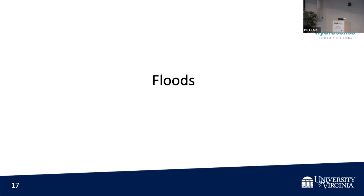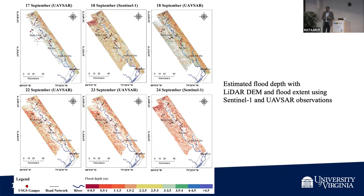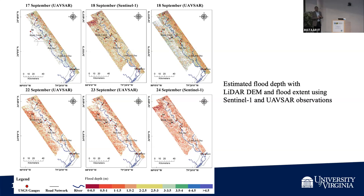I said I'd talk about floods, droughts, landslides, and permafrost. For floods: this is Hurricane Florence-induced flooding in South Carolina, the PD watershed, September 17 to 24. We're using the gauge network as well as two instruments: the UAVSAR flown by JPL at 1.8 by 0.8 meter spatial resolution and 16-kilometer swath L-band, and the Sentinel-1, which is a European C-band instrument with 5 by 20 meter spatial resolution and 250-kilometer swath. We interspersed them because neither flew over every day.